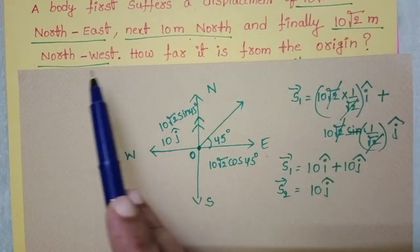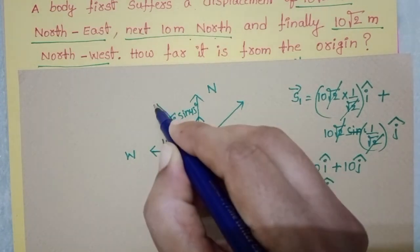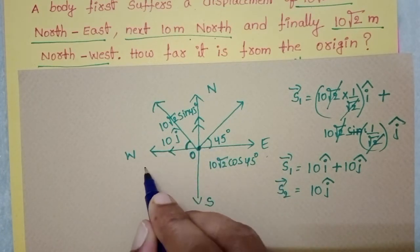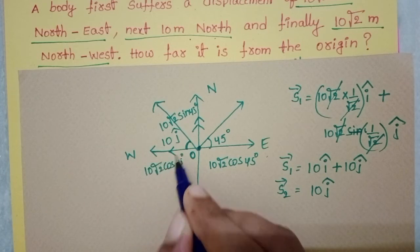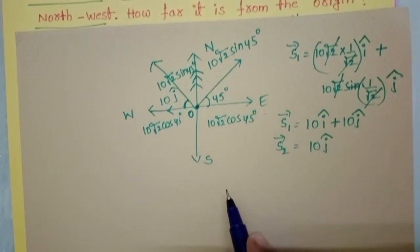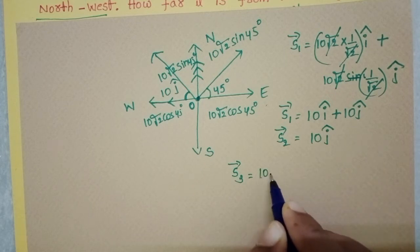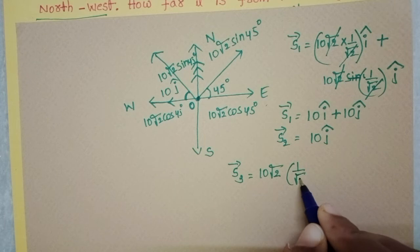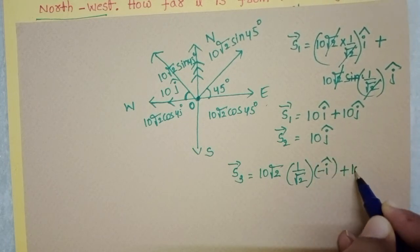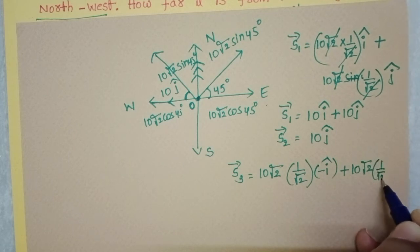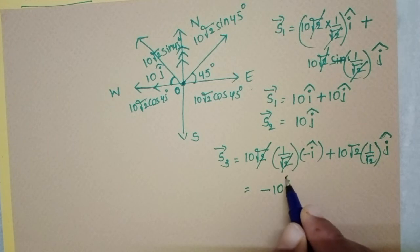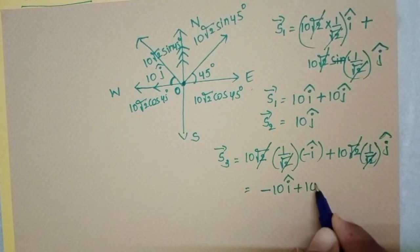Finally, the particle moves 10√2 meters along the north west direction. North west also makes an angle of 45 degrees. Along the west direction the component is 10√2 cos45°, and along the north direction it is 10√2 sin45°. So S3 = 10√2 cos45° × (1/√2) with unit vector −i cap (west direction), plus 10√2 sin45° × (1/√2) with unit vector j cap. After cancellation, S3 = −10i cap + 10j cap.